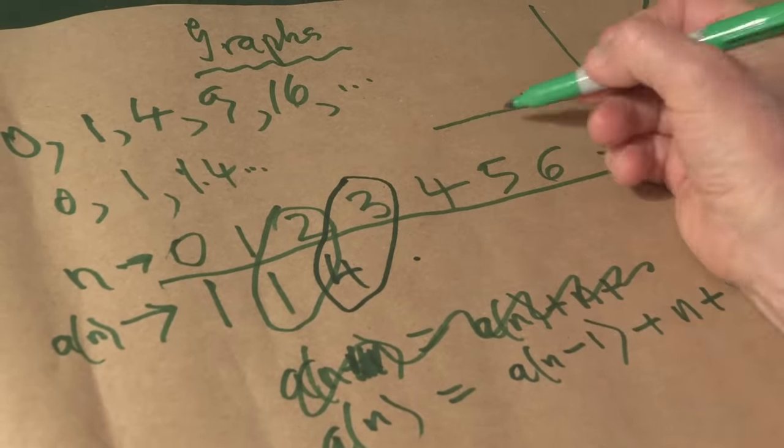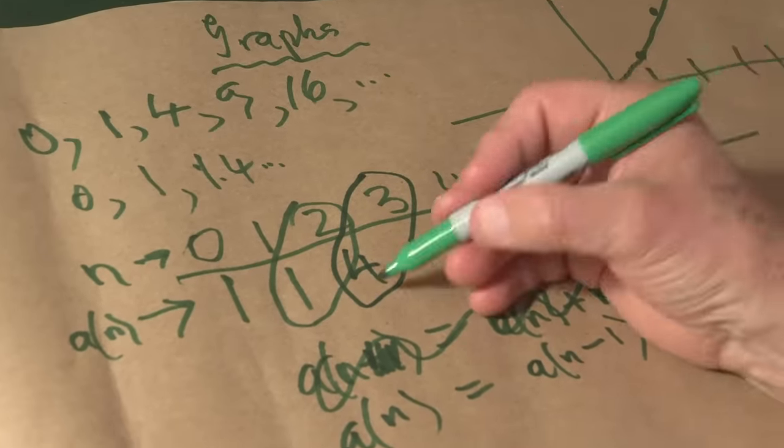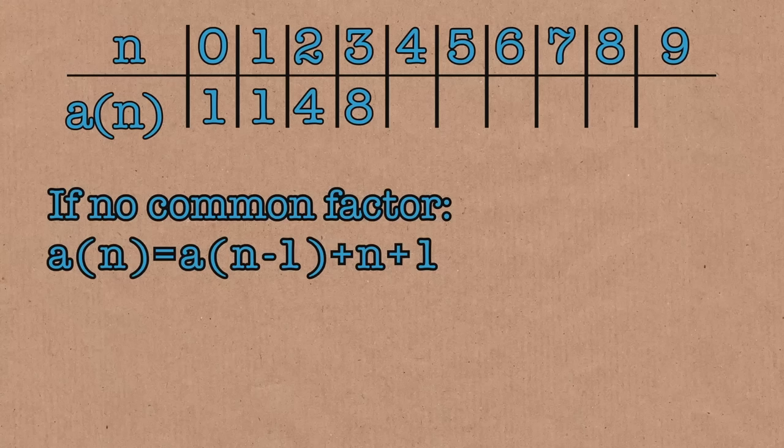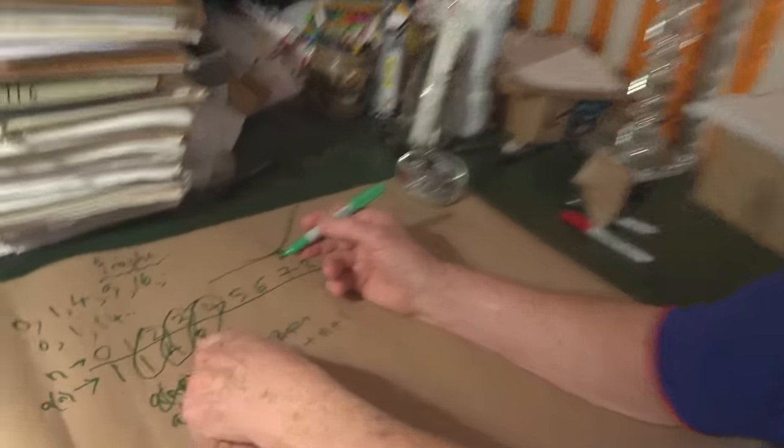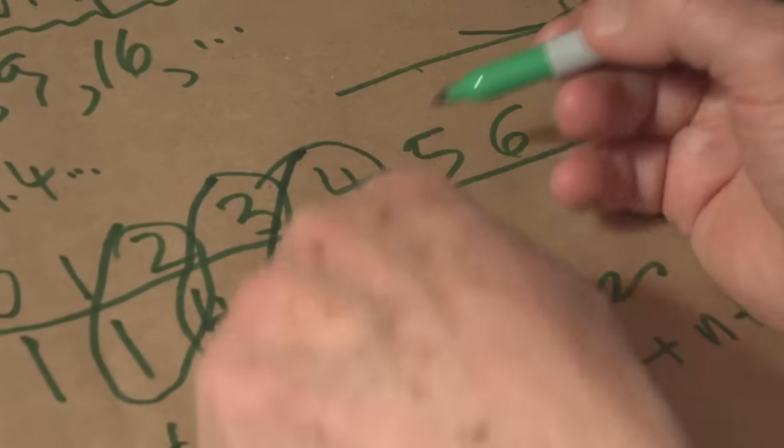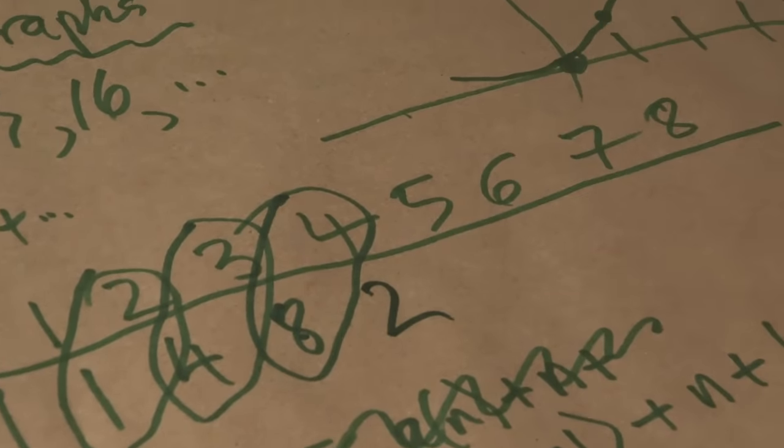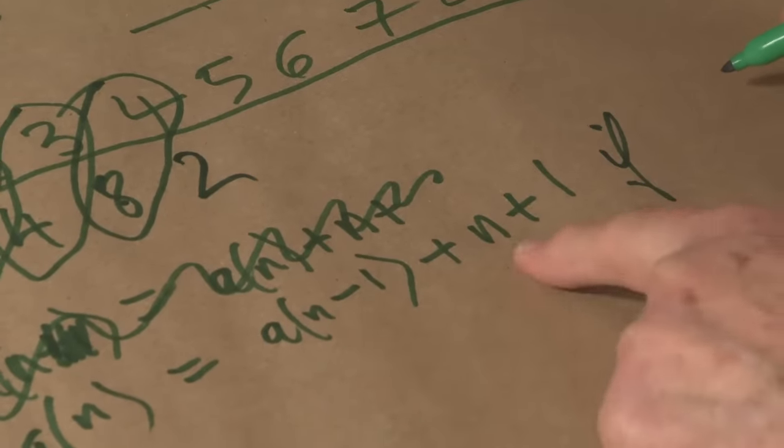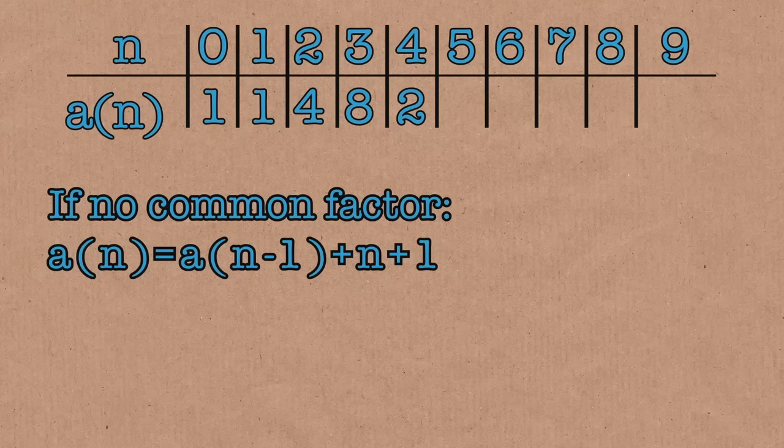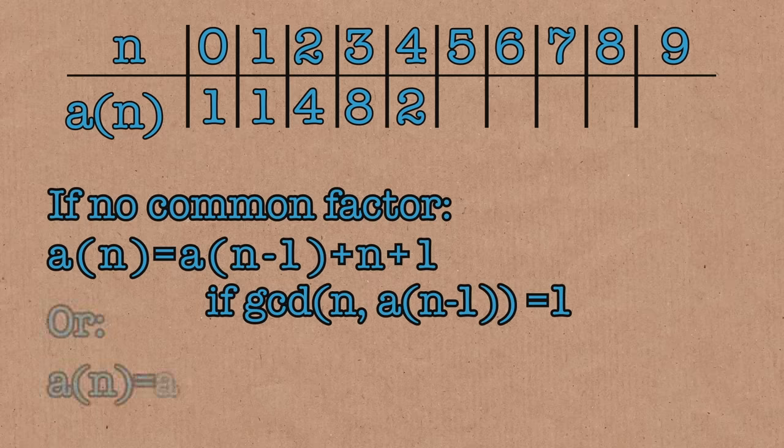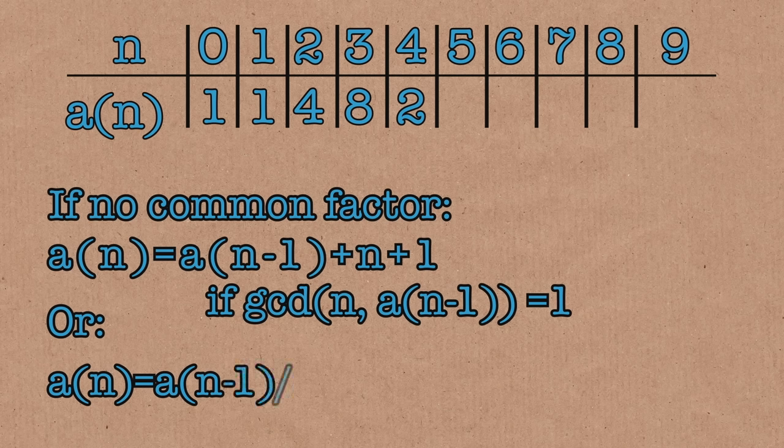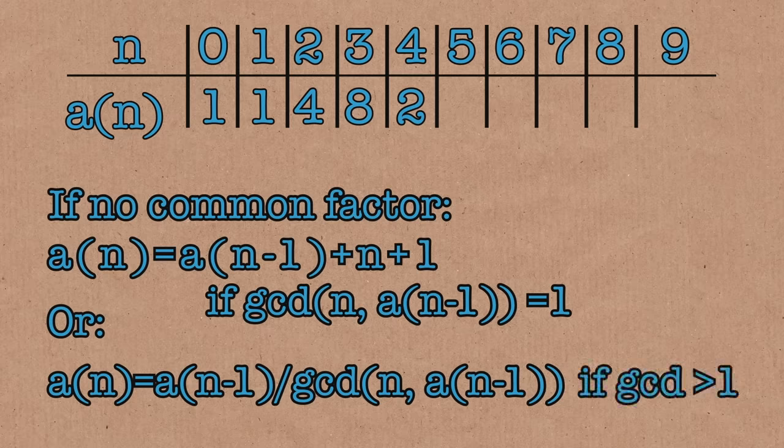What goes here? Well, we look at 3 and 4. Do they have a common factor? They do not. So again, the next term is 4 plus 3 plus 1, it's 8. Now, we look at this pair of terms. What's the fourth term? We look at 4 and 8. Aha! They have a common factor of 4. When that happens, we divide the previous term by that common factor. So here the common factor is 4, 8 divided by 4 is 2. So a of n, the rule is, it's either the previous term plus n plus 1, if the greatest common divisor of a of n minus 1 and n is equal to 1, if they were relatively prime, or it's equal to a of n minus 1 over gcd of n and a of n minus 1, if this gcd is bigger than 1.